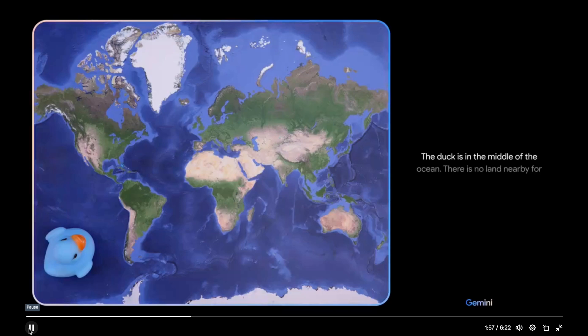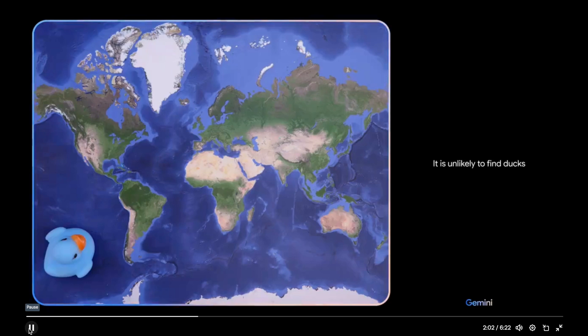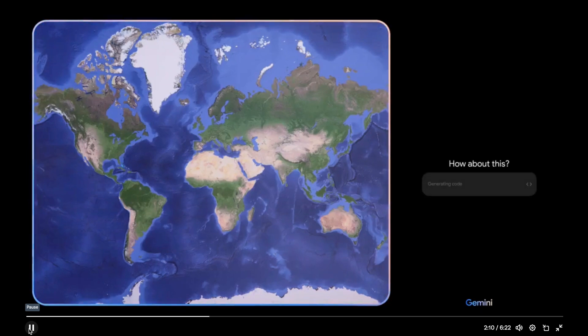The duck is in the middle of the ocean. There is no land nearby for the duck to rest or find food. It is unlikely to find ducks here naturally. Okay. Based on what you see, come up with a game idea. Oh, and use emojis, please. How about this? We can play a game called Guess the Country.